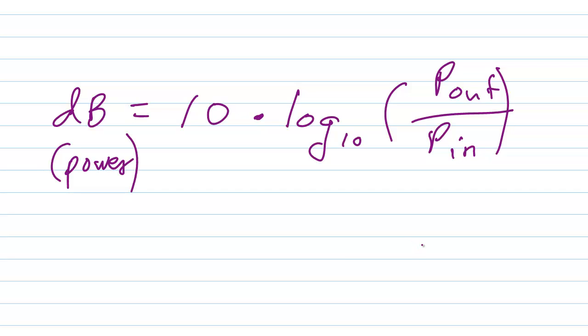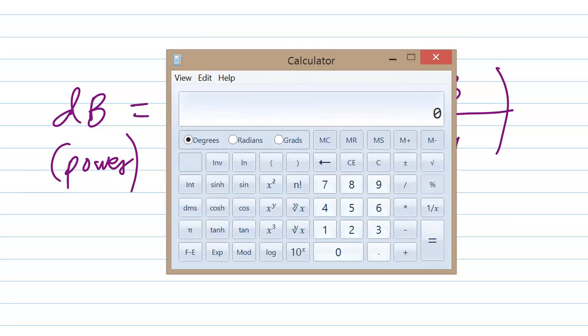Let's just use a concrete example. Suppose that P_out is three watts and P_in is one watt. So I'll just erase these numbers here. What's that? Three.